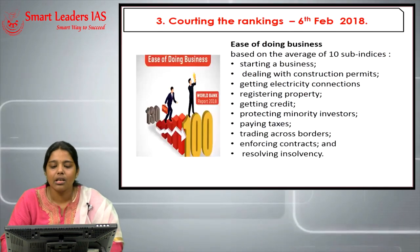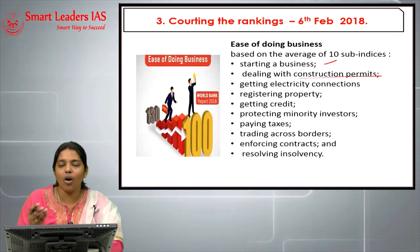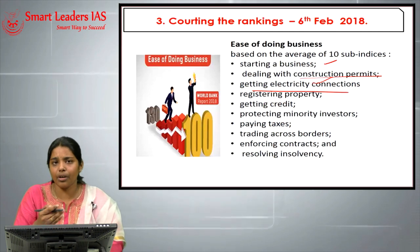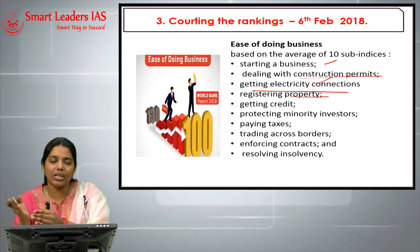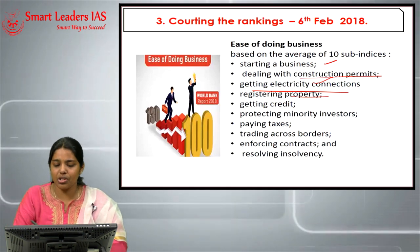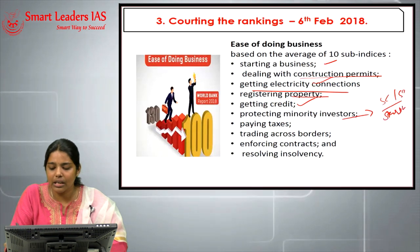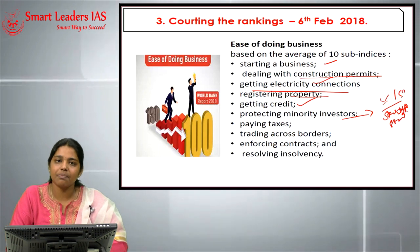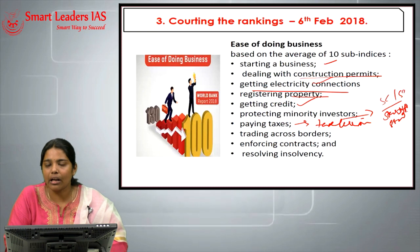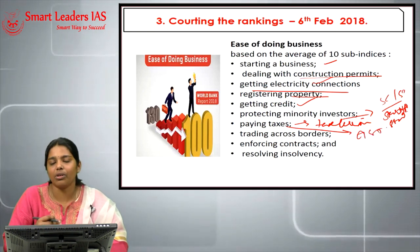The Ease of Doing Business is based on an average of 10 sub-indices: starting a business, dealing with construction permits, infrastructure connections like electricity, registering property, getting credit, protecting minority investors — where SC/ST startup hubs can be mentioned — paying taxes (where GST improvements apply), and trading across borders. The report did not calculate India's GST measures or demonetization, so paying taxes improvement can be linked to GST.